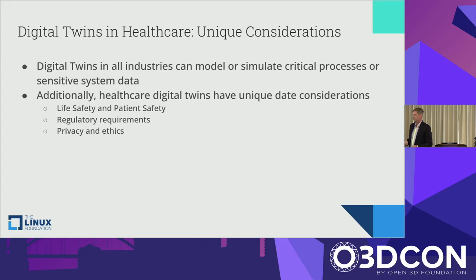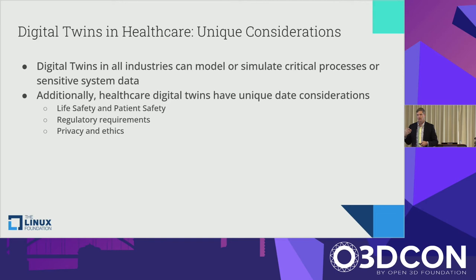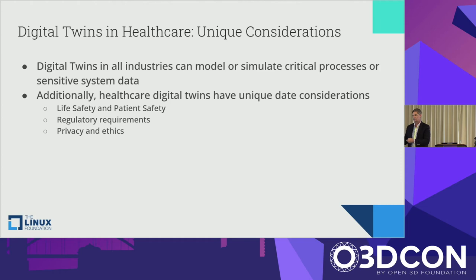Healthcare has unique considerations for digital twins. All industries model critical processes and sensitive data, but in healthcare the stakes are different — if we get a wind tower model wrong that's one thing, but getting it wrong with patient data for life safety or medical delivery is another. Criticality applies not only to the computers and data but to how they're used. This is where open source plays an important role: transparency in the processes, data science, and aggregation models — ensuring we can say yes, this is a clinically evidence-based standard driving this AI/ML process.